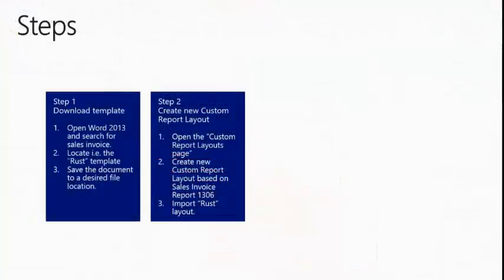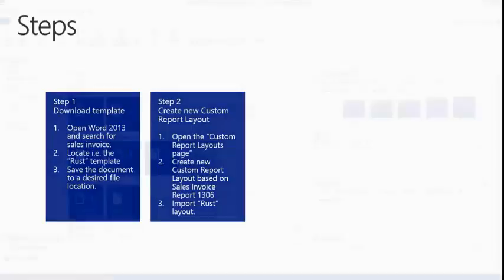Step number two: create a new custom report layout. We will open the custom report layout page, create a new custom report layout based on the sales invoice report 1306, then import the Rust Invoice template and view the report with its new layout.